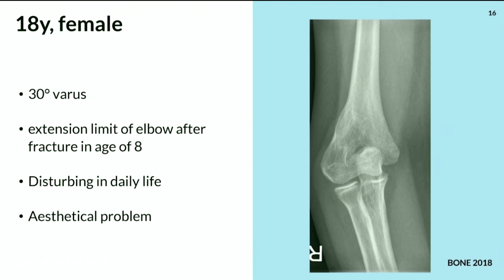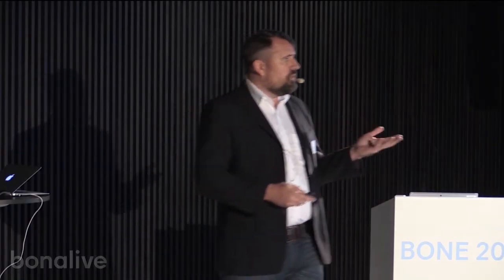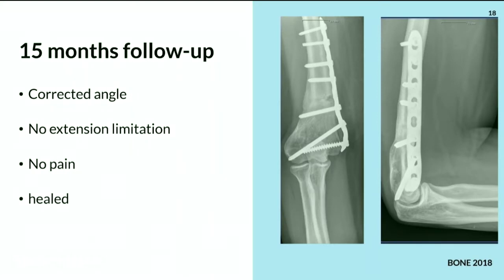Another interesting case: a patient who had a fracture of the distal humerus at age eight that was not treated, presenting now with a 30-degree varus of the elbow. The goal was a multiplanar osteotomy with a broad plate, leaving a gap in the osteotomy region. You could leave the gap alone — it might heal — but I filled it to accelerate regeneration. On follow-up, the gap is filled, it's stable, and the angle is corrected.